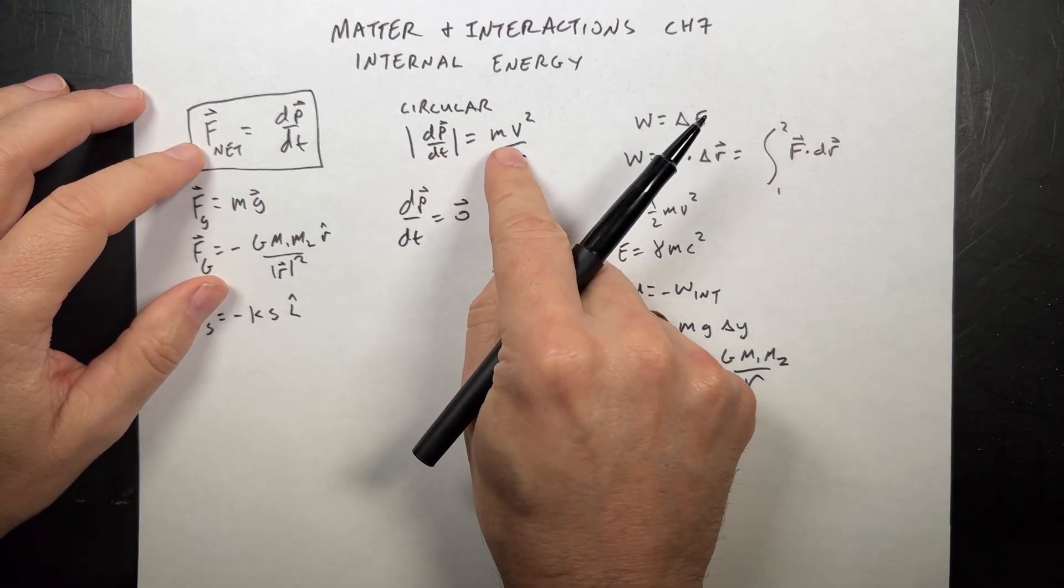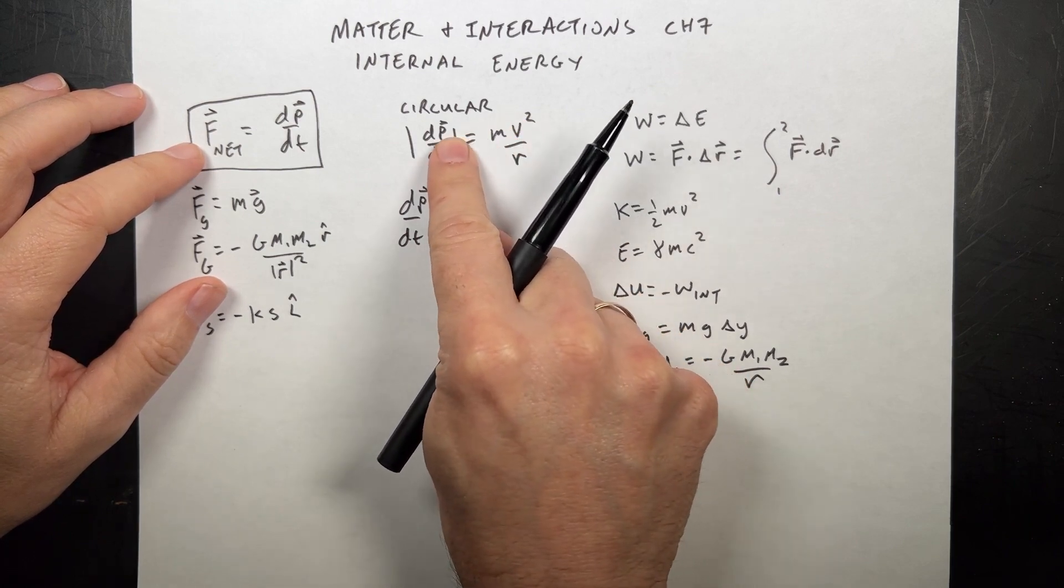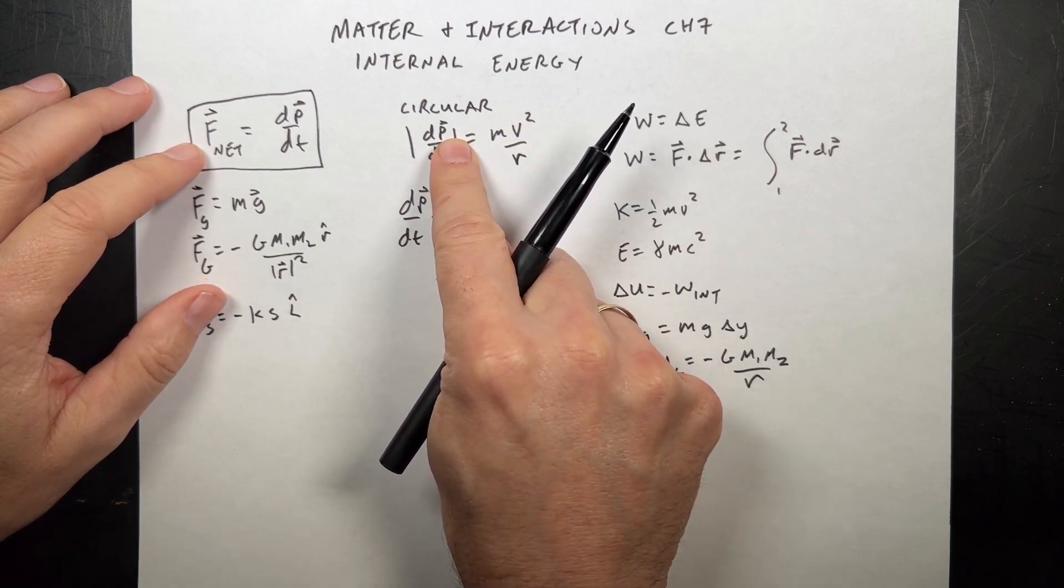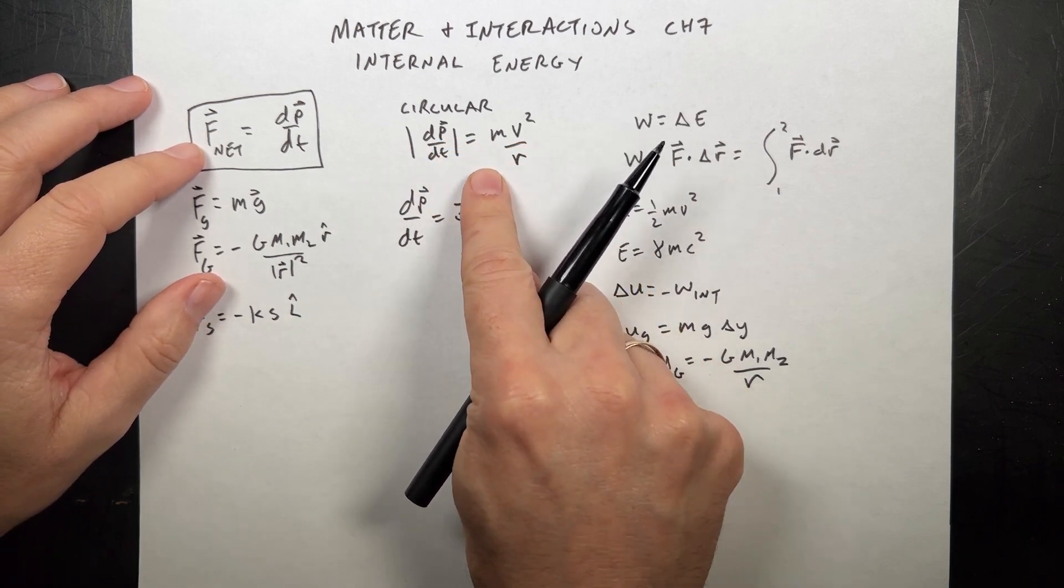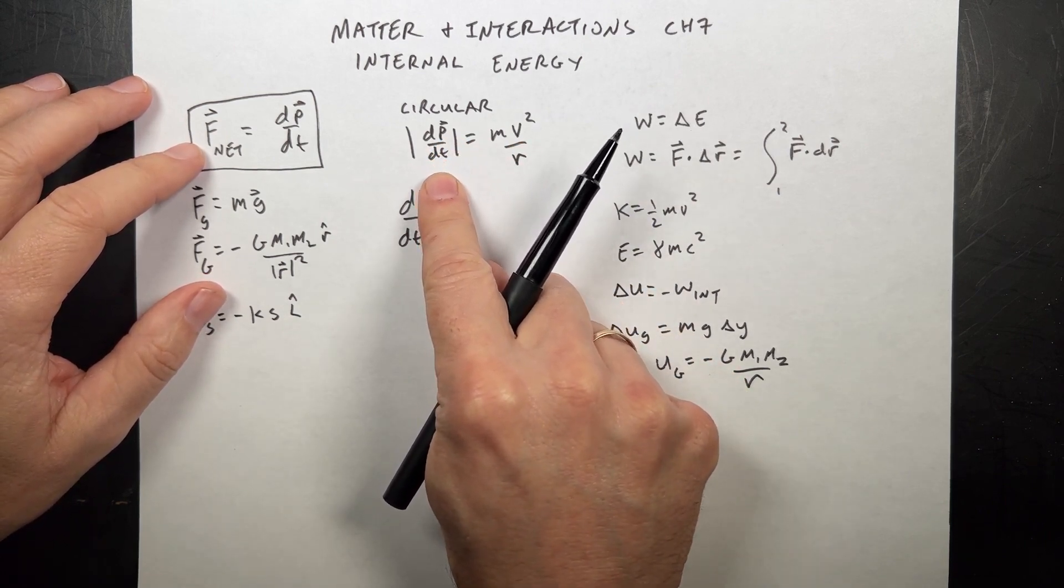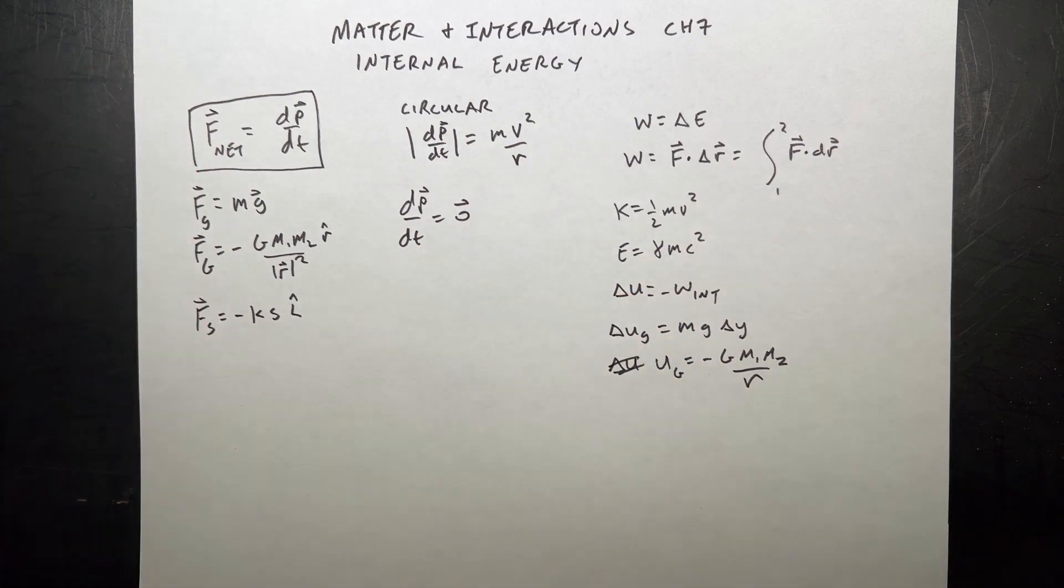The other was circular motion. If we have an object moving in a circle at constant speed, constant magnitude of momentum, but the direction changes, the magnitude of the derivative is mv squared over r.